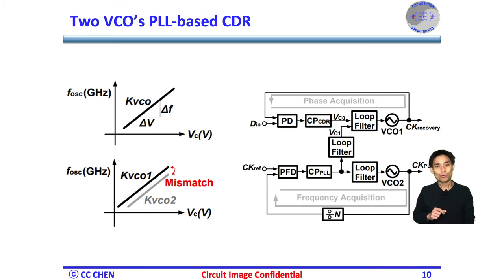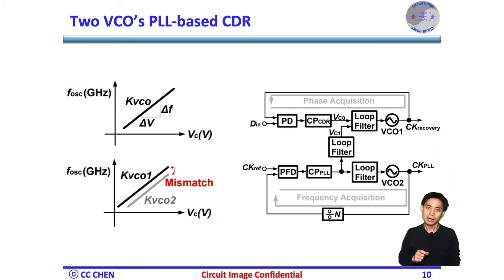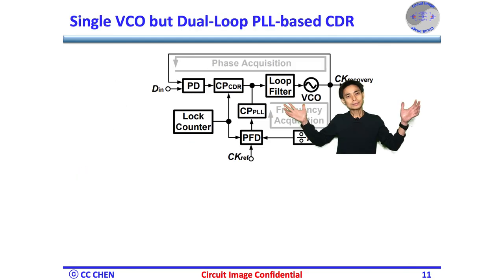If the two VCOs were the issue in the PLL-based CDR, what can you do? Bingo! If the two VCOs were the issue, why don't you just apply a single VCO to mitigate the concern? The single VCO PLL-based CDR image may eliminate the mismatch, frequency pulling, and area issues. In addition, the dual loop can still help the frequency tracking loop to avoid the false lock, and the phase tracking loop will still be fast aligned with the input data.